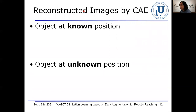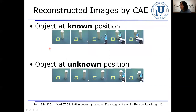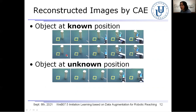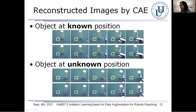Let us first show the reconstructed images from the convolutional encoder CAE. These are input images of the object placed at the known and unknown positions. For the object placed at the known positions, both the object and robot hand were shown in the reconstructed images. For the object placed at the unknown positions as well, both the object and robot hand were also shown in the reconstructed images. These results indicate that the correct image features were extracted and fed as inputs into the recurrent neural network.